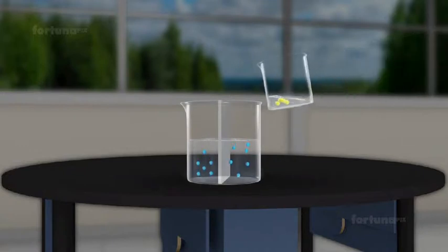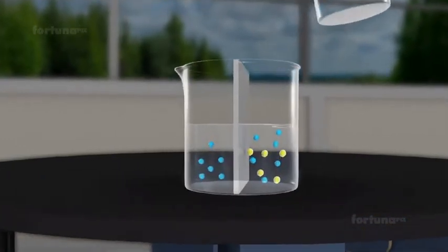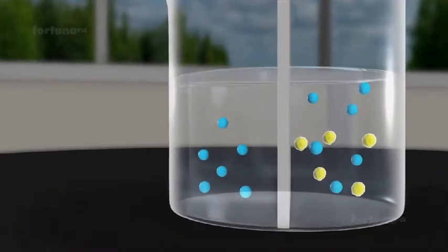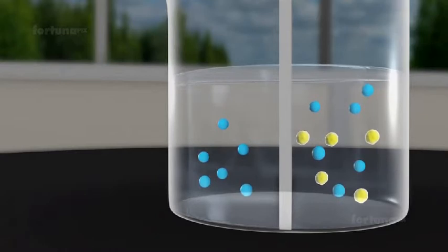Next, we'll add urea to the water on the right side of the membrane. It will not cross the membrane for two reasons: its molecules are polar, and they are larger than water molecules.